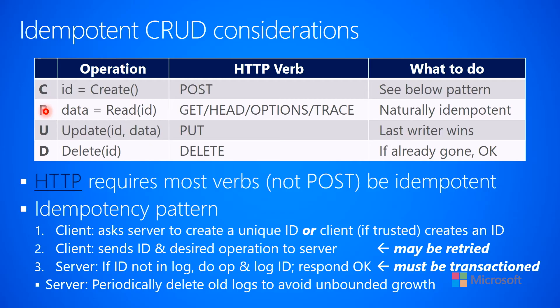A read operation is where the client performs a read against some ID, like a bank account number, and gets data back. Typically done with HTTP GET, HEAD, OPTIONS, or TRACE verbs. These verbs are naturally idempotent — if you ask a bank account how much money is in it and it returns a number, retrying will return the same number. Usually nothing special needs to be done for a read operation.